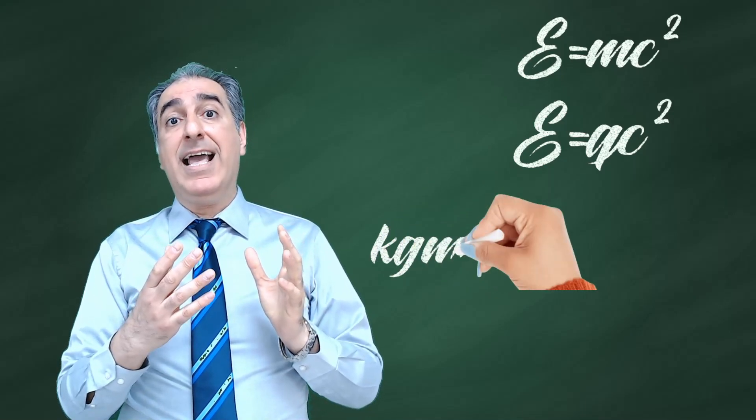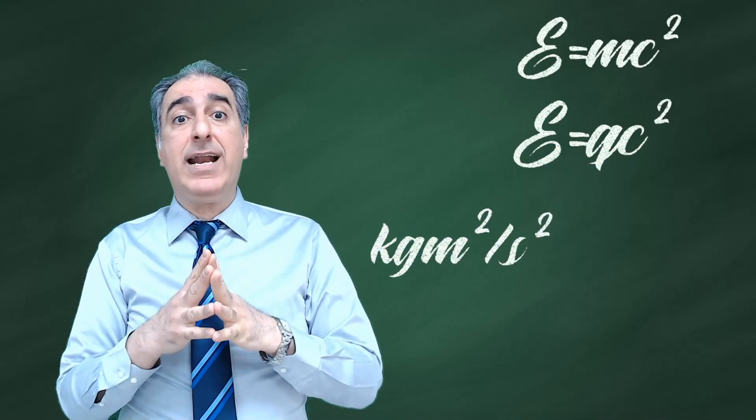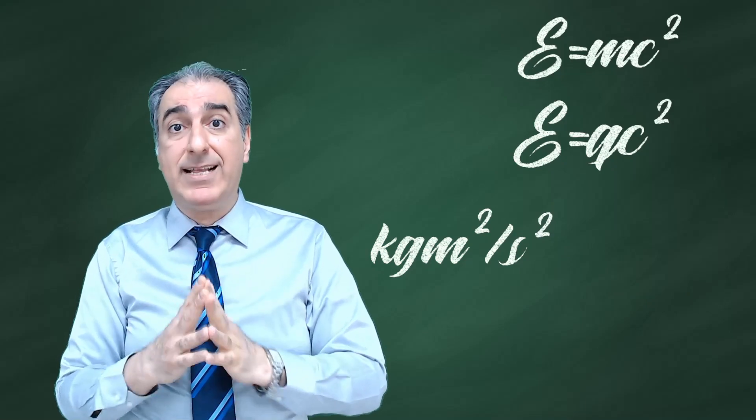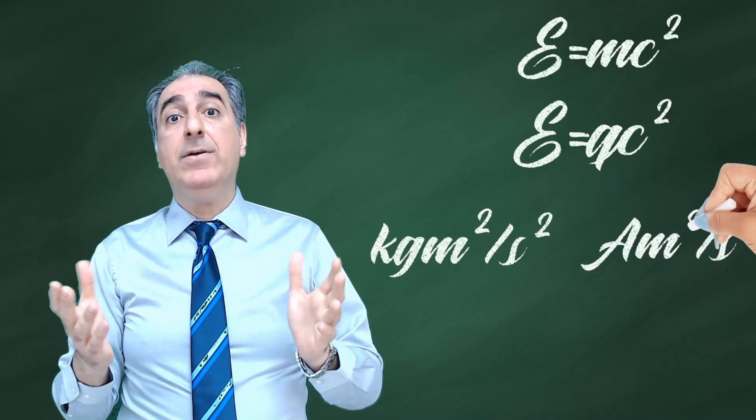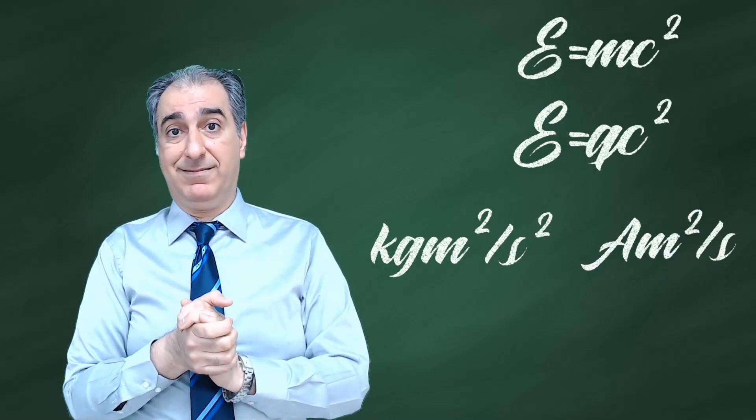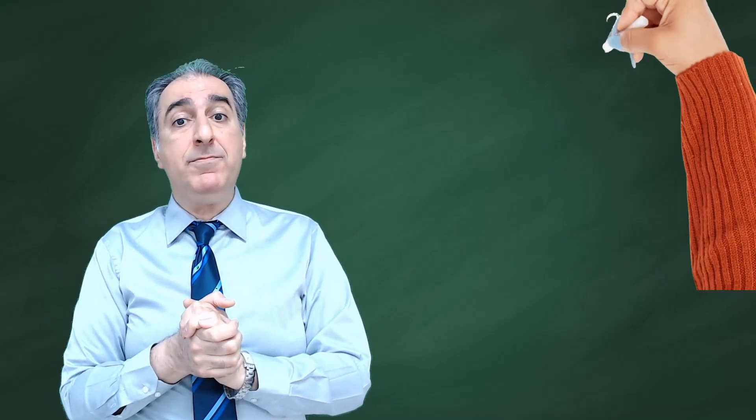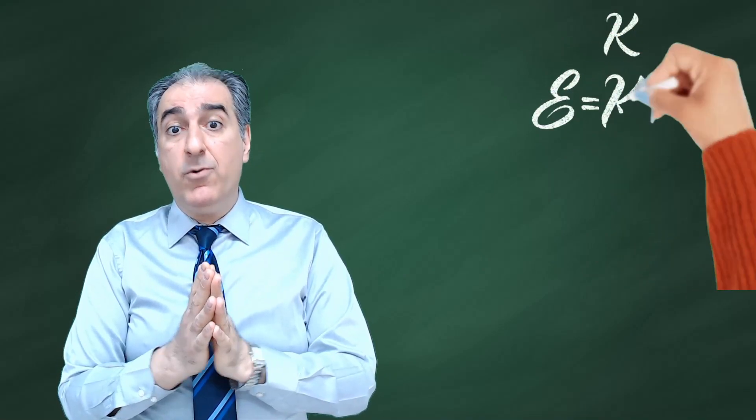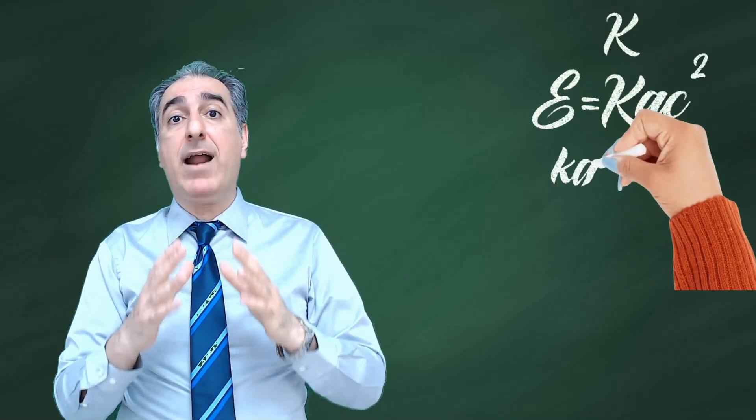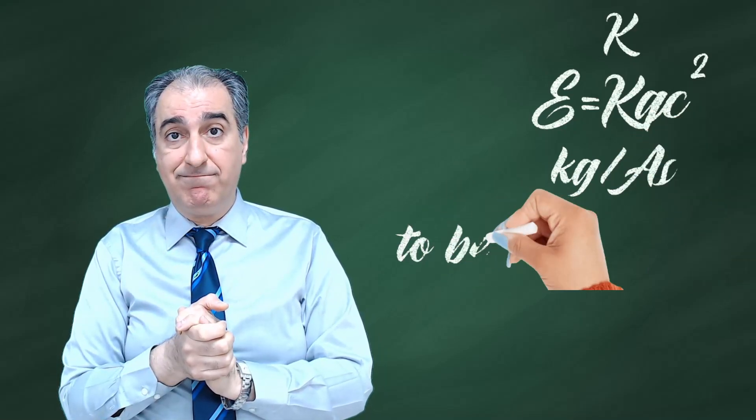The left side has as its unit kilogram meter squared per second squared, while the right side has amp meter squared per second. You may multiply K to the right, a constant with the unit kilogram per amp second.